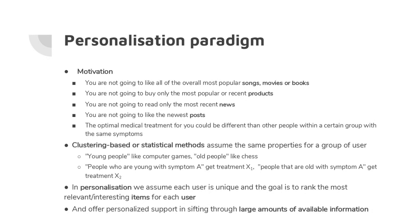In medicine, you traditionally divide people into groups: all young people with symptom A get treatment X1, and all slightly older people with symptom A get treatment X2. That's how medicine works — you assign a treatment to each group based on statistical properties. But that's different from personalization, where we assume each user is unique.